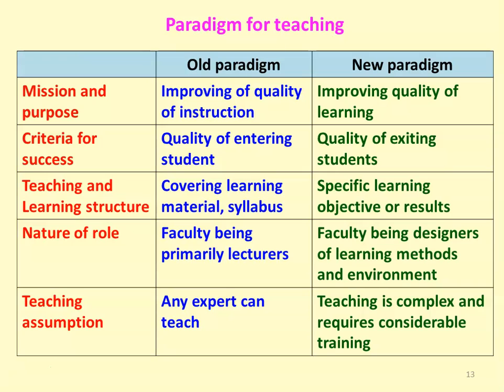The criteria for success: earlier it was the quality of entering students — if you have good-quality students they will be successful. But today it is the quality of exiting students. Based on program outcomes and quality outcomes, we have to produce students of better quality going outside the college. Teaching and learning structure: earlier it was about covering the material or the syllabus — if you covered the syllabus you were a good teacher. But today it is based on specific learning objectives or learning results — course outcomes, lecture outcomes, program outcomes — it is result-oriented and outcome-based.